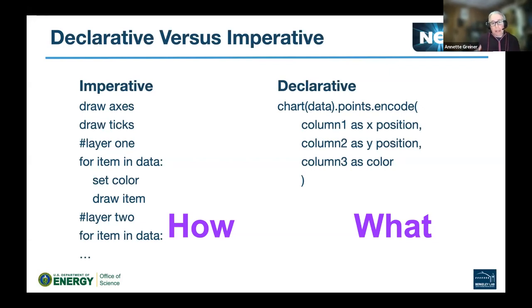It's more about like saying, I want to use this data to make a chart, and it's going to be using points. And I'm going to encode the first column as X position, and second column as a Y position. And the third column is going to be color.